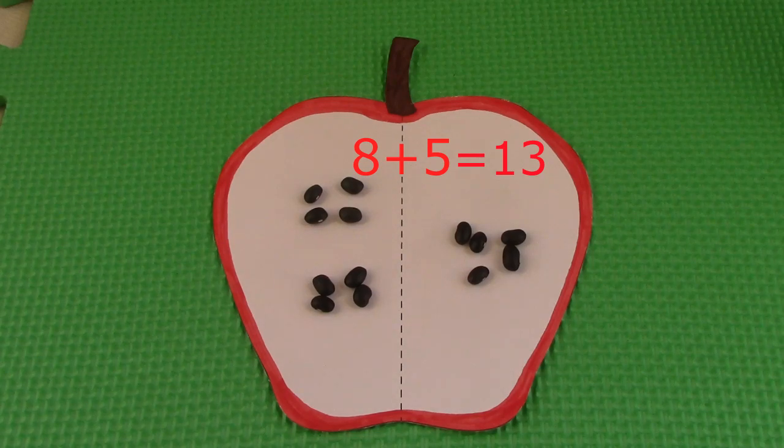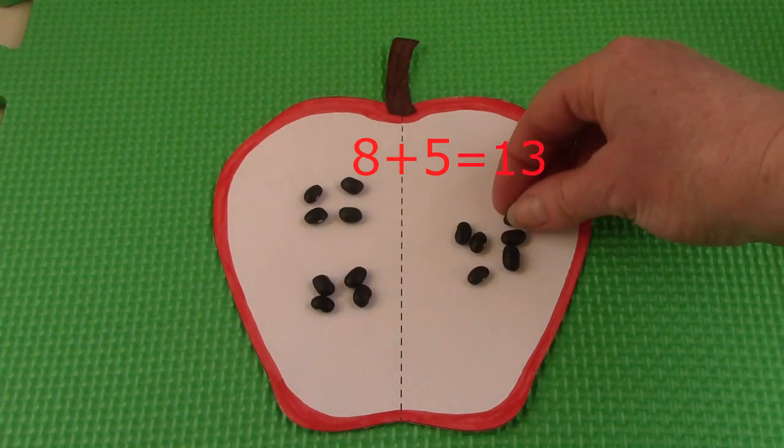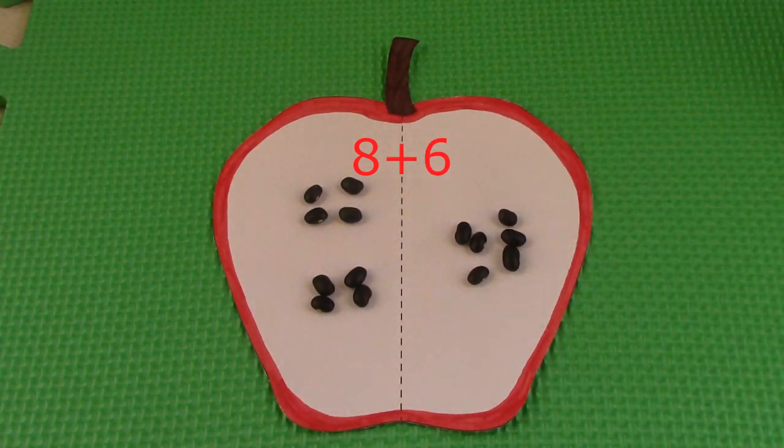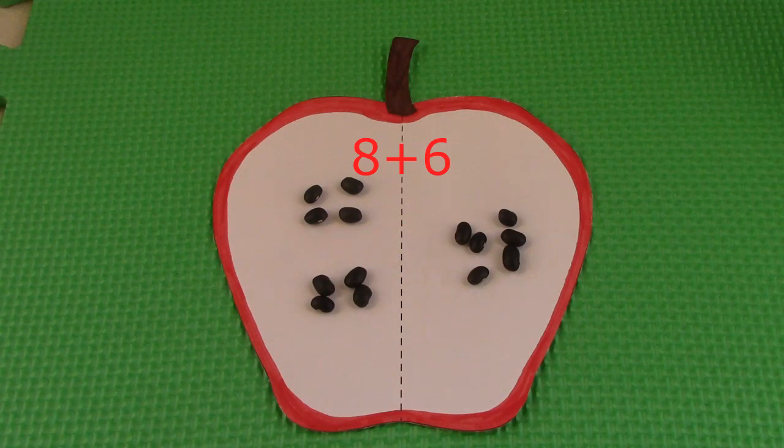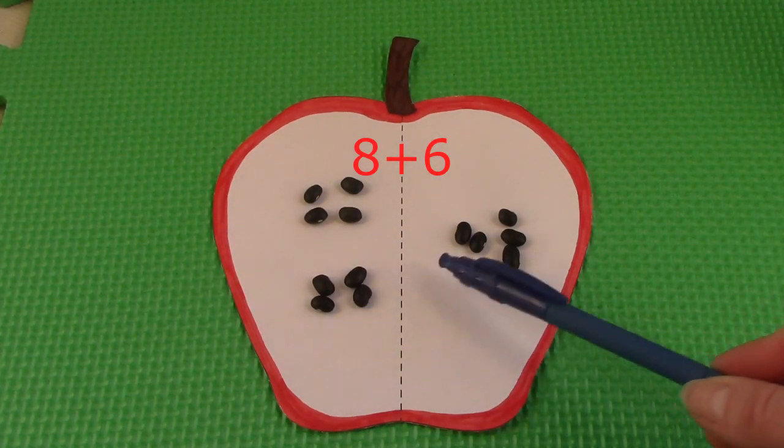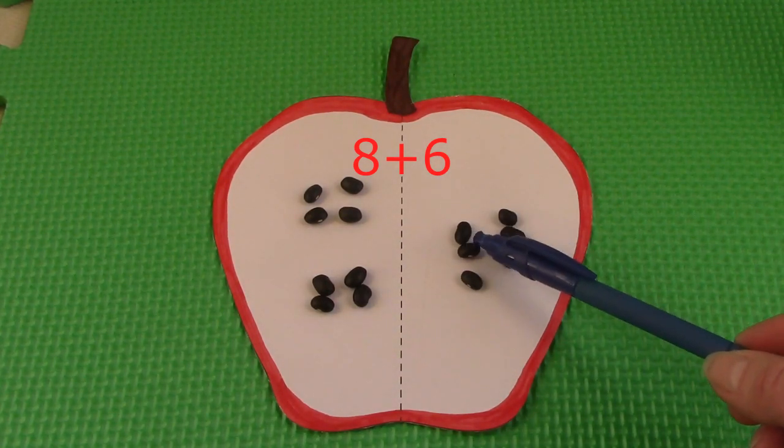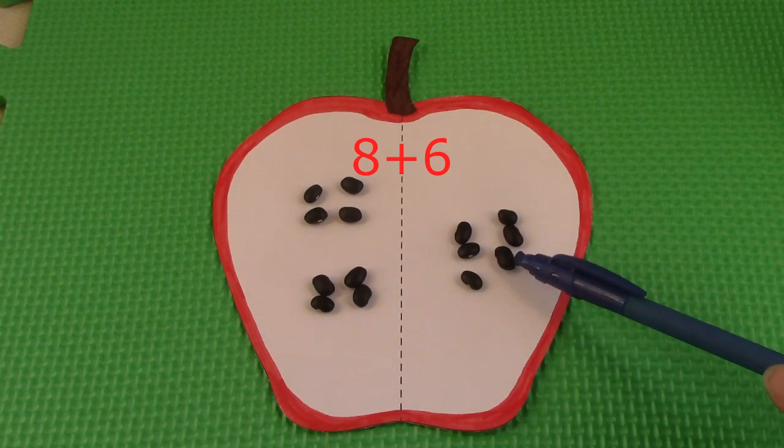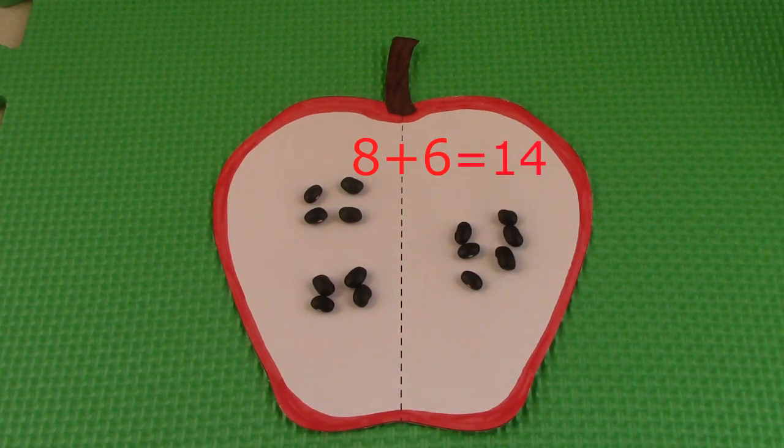What if we keep the 8 side the same and we add another one over here so that it's 8 plus 6? 8 plus 6. If 8 plus 5 was 13, what would 8 plus 6 be? Let's count it out. 8, 9, 10, 11, 12, 13, 14. 8 plus 6 is 14.